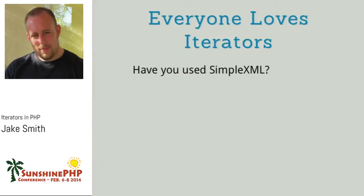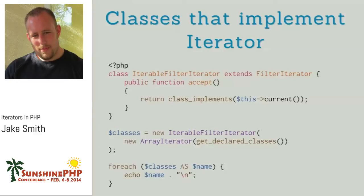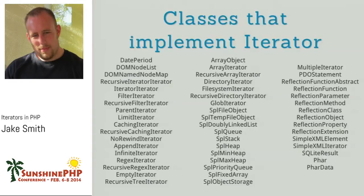How many people have used SimpleXML? How many people have used PDO? All of these return results as an iterator — you can do a foreach over a SimpleXML result or a PDO result; that's implementing an iterator. I was curious how many classes in PHP actually implement Iterator, so I wrote a quick script using an iterator to filter and find how many classes actually implement Traversable. This list is from PHP 5.3 and hasn't been updated for 5.5, so there are even more. There's a good chance you've used an iterator and didn't even realize it.